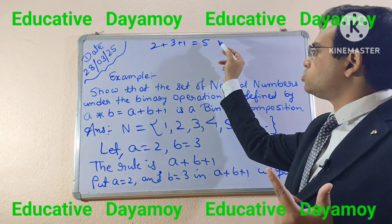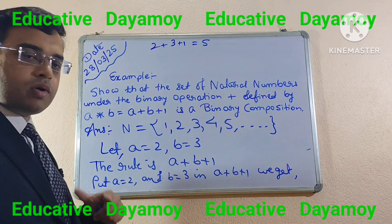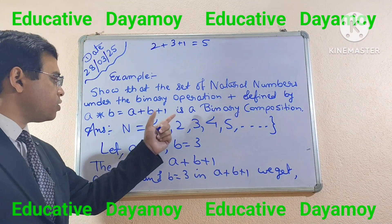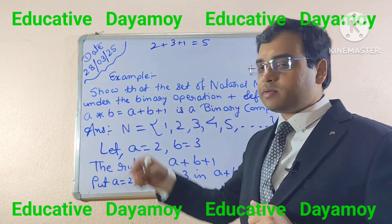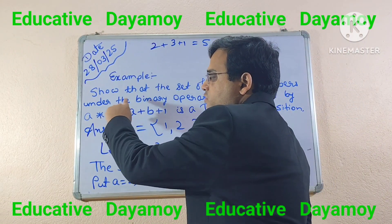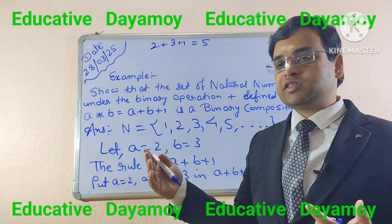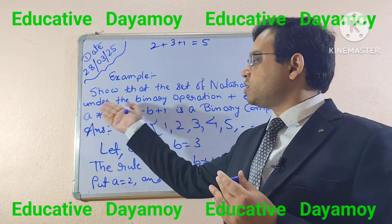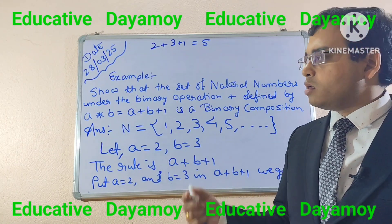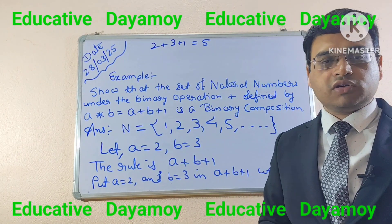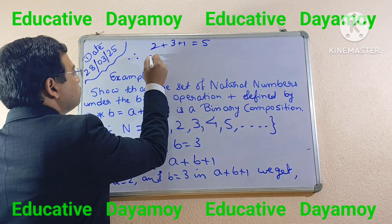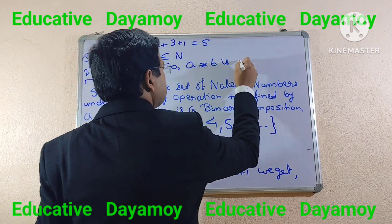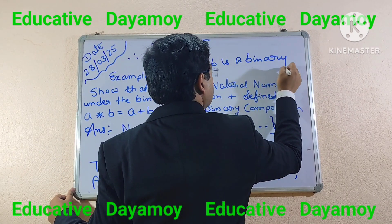The result 6 belongs to the set of natural numbers. Therefore, A asterisk B is a binary composition. You can also take other values such as A=1, B=5, or A=7, B=10 — in each case a unique result is produced belonging to the natural numbers. Therefore, since the result belongs to N, A asterisk B equals A plus B plus 1 is confirmed as a binary composition.